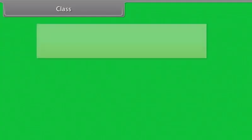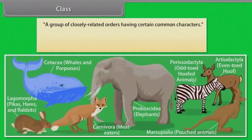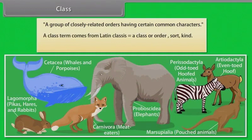A class is a group of closely related orders having certain common characters. The term class comes from Latin classis, meaning a class, order, sort, or kind. For example, class Mammalia.